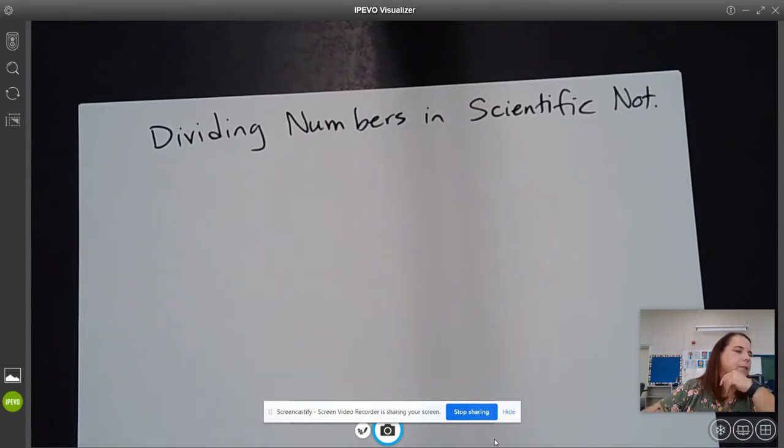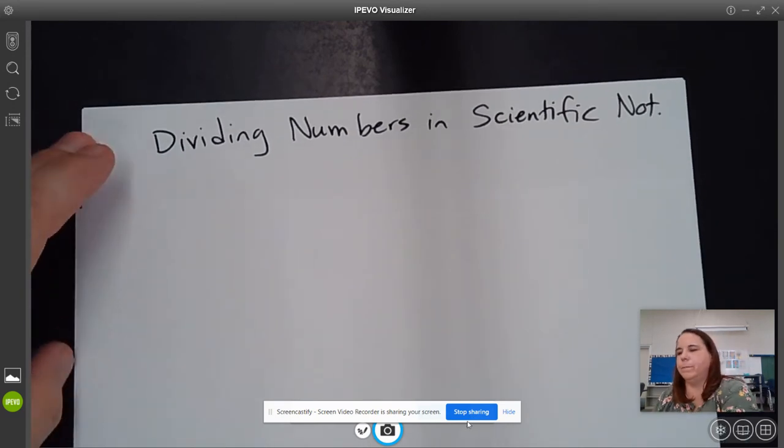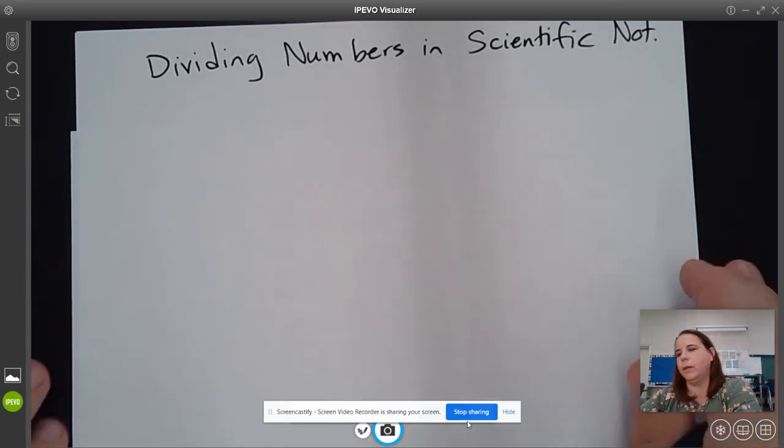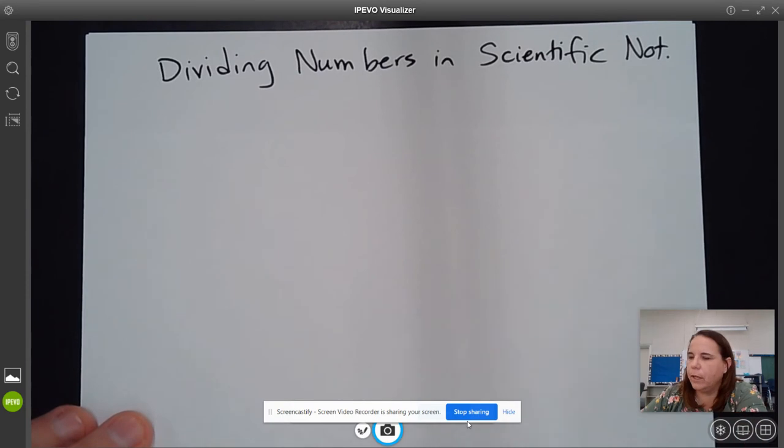So we're going to be dividing numbers in scientific notation. A piece of background math that might help you understand how or why this strategy works is to think about when we have other divisions.